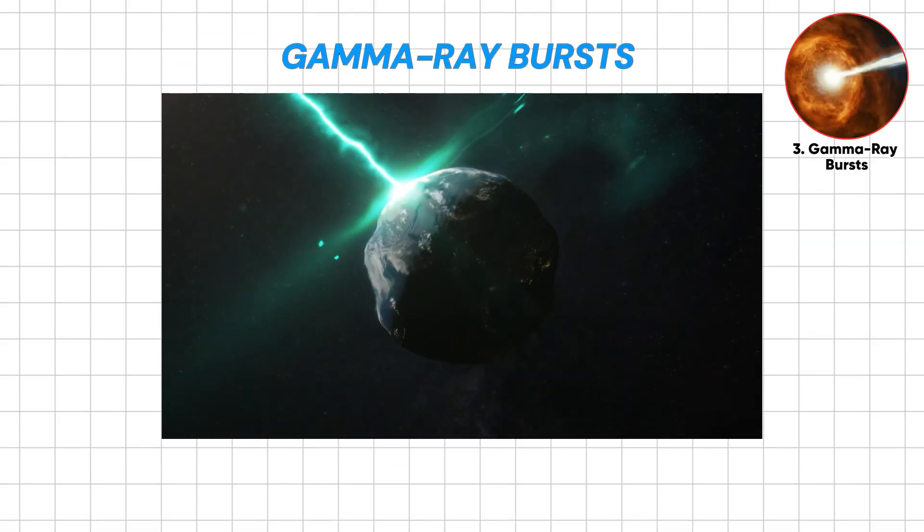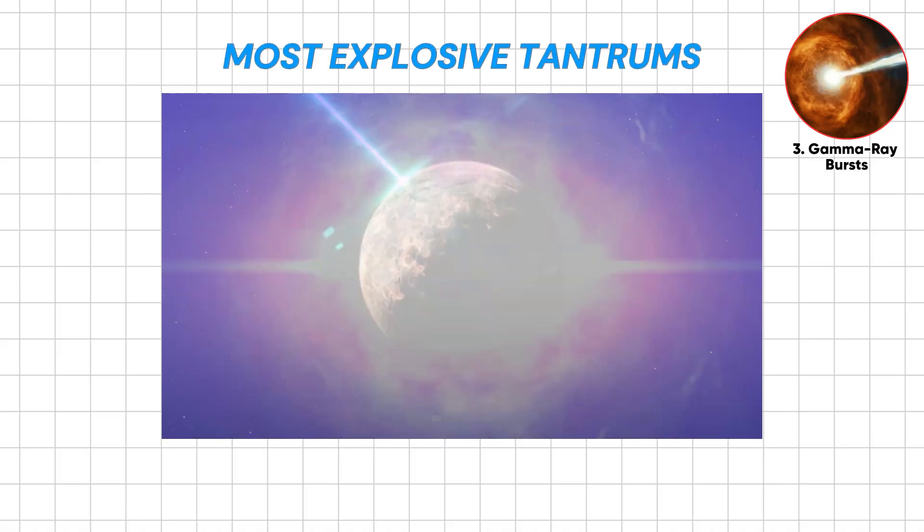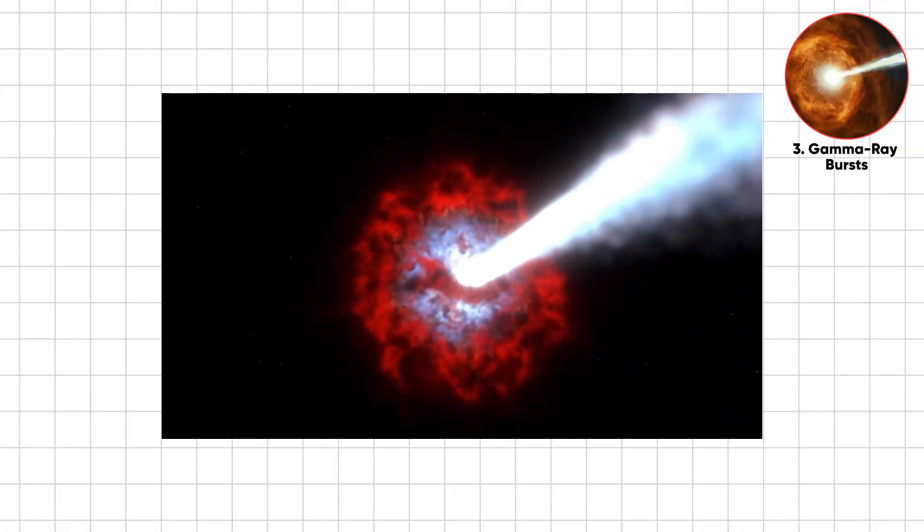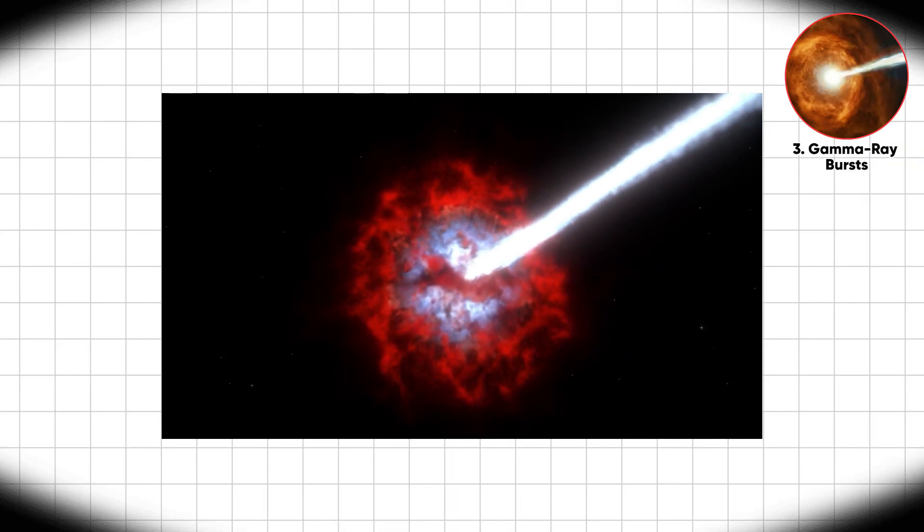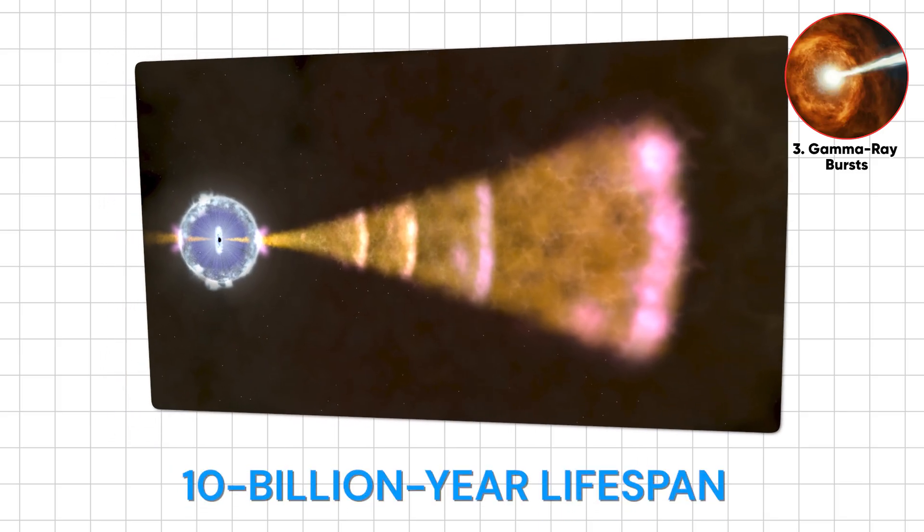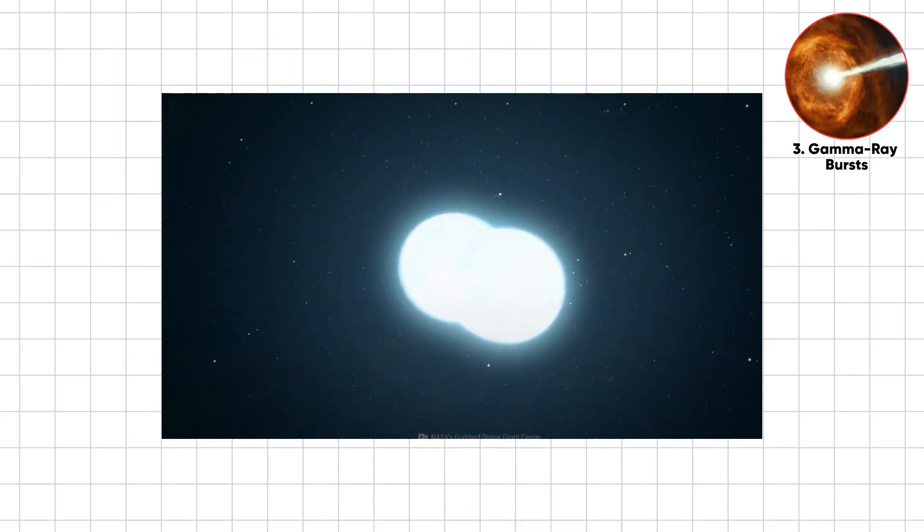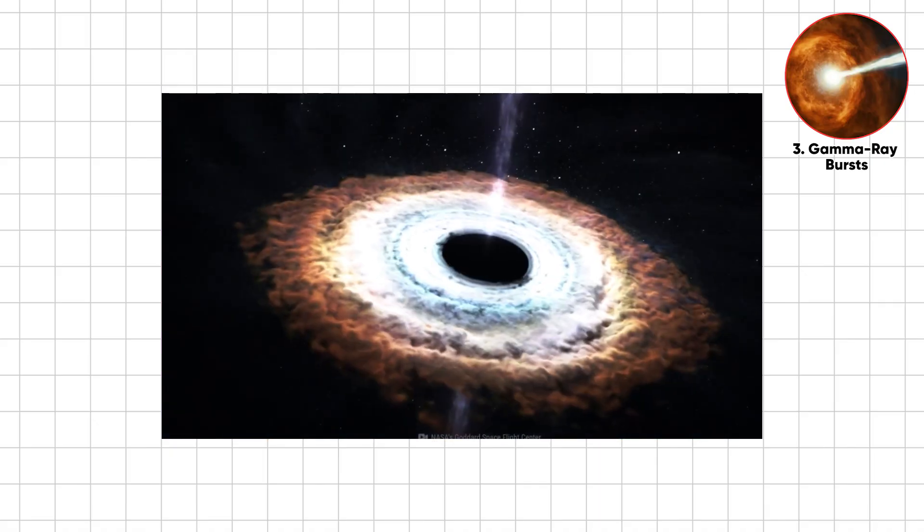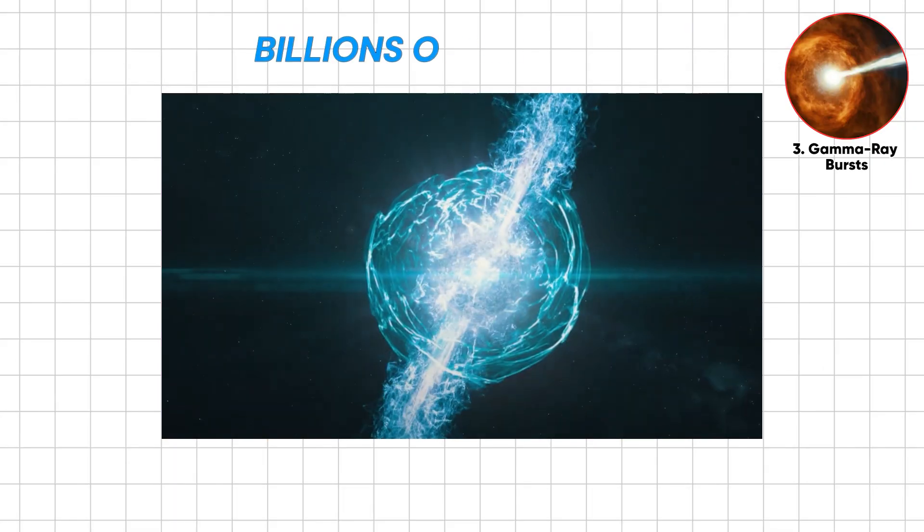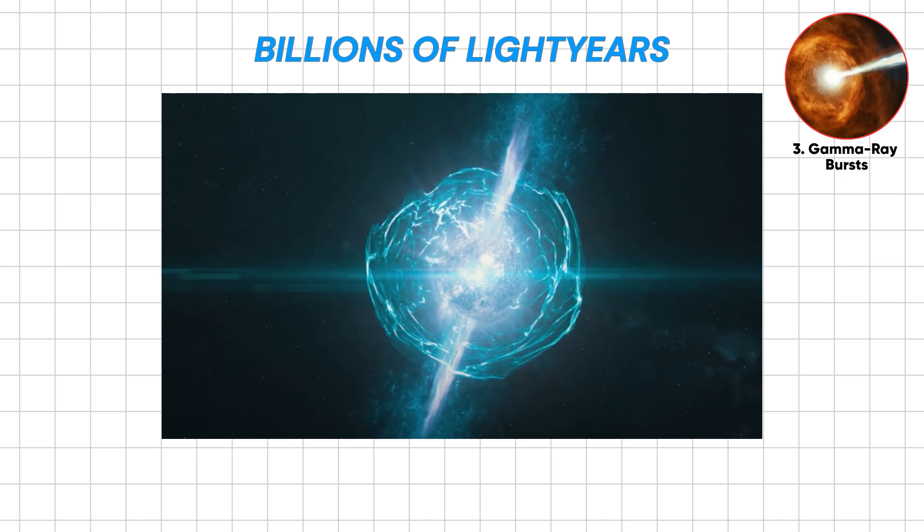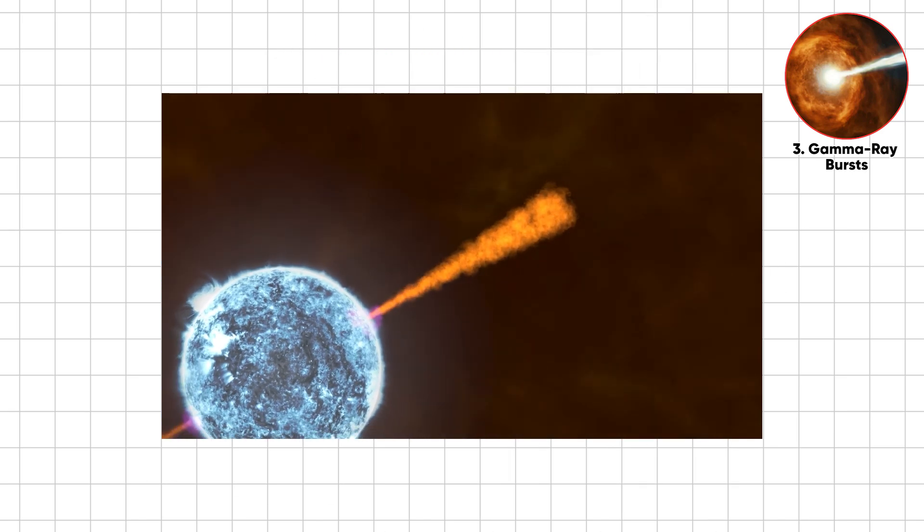Gamma ray bursts, GRBs, are the universe's most explosive tantrums, blasting more energy in seconds than the sun will produce in its entire 10 billion year lifespan. These bursts can sterilize entire star systems, wiping out planets and lifeforms across billions of light years with no warning. Earth caught in one's direct path would see its ozone peel away instantly, unleashing a wave of annihilation.